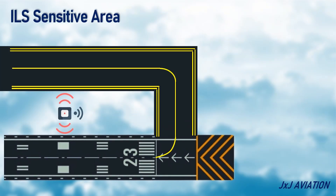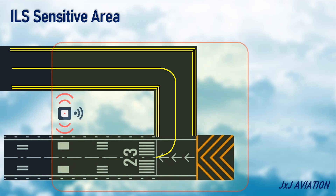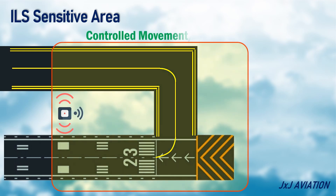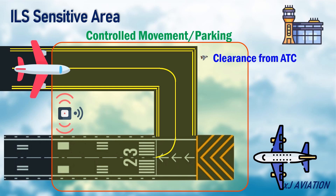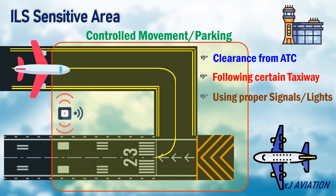ILS Sensitive Area. This is an area where movement or parking of vehicles, such as an aircraft, is controlled. Controlled movement would include obtaining clearance from ATC, or following a certain taxiway, or using proper signals or lights. The sensitive area extends beyond the critical area.